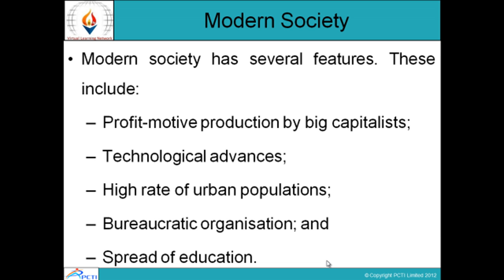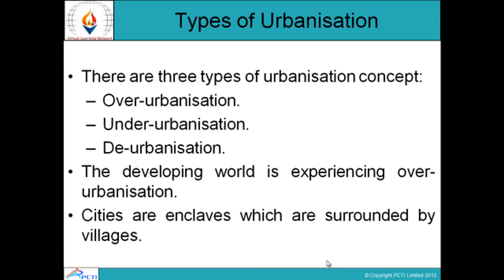Modern Society. Modern society has seven features: profit motive production by big capitalists, technological advances, high rate of urban population, bureaucratic organization, and spread of education. Big industrial tycoons have the profit motive behind producing any product or service. There is greater spread of education and education facilities in modern society, along with greater awareness about education.